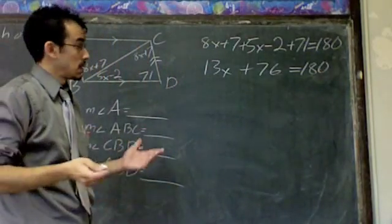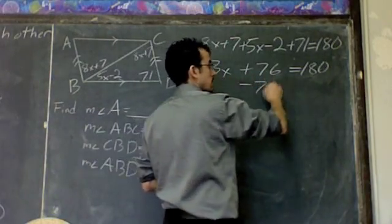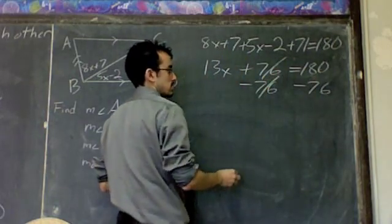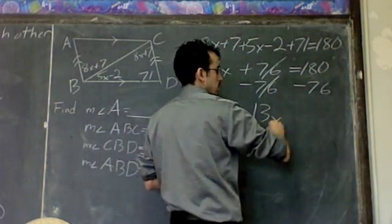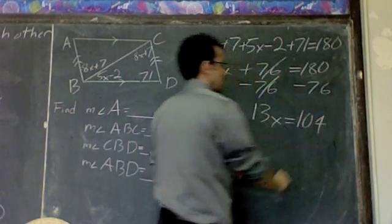Well now, just solve the equation like you normally do. I want x alone. Subtract the 76 from the left and from the right. We get these are going to cancel. Bring down the 13x. Bring down your equal sign and 104.